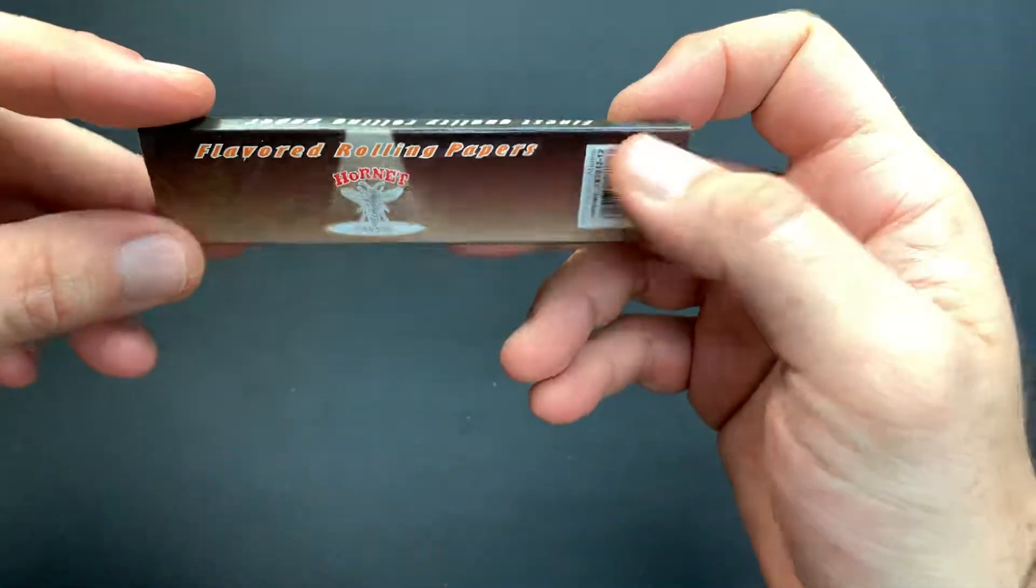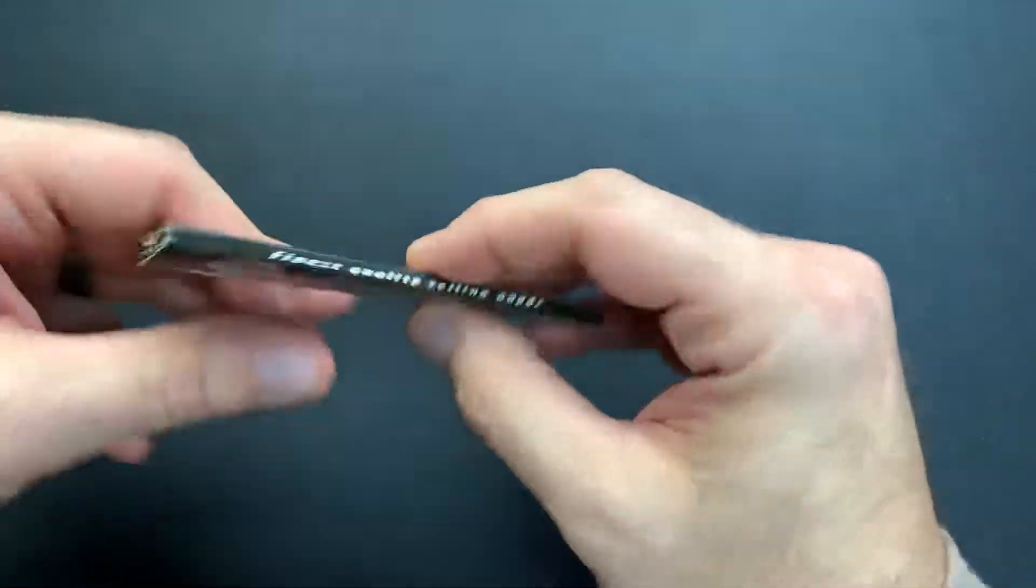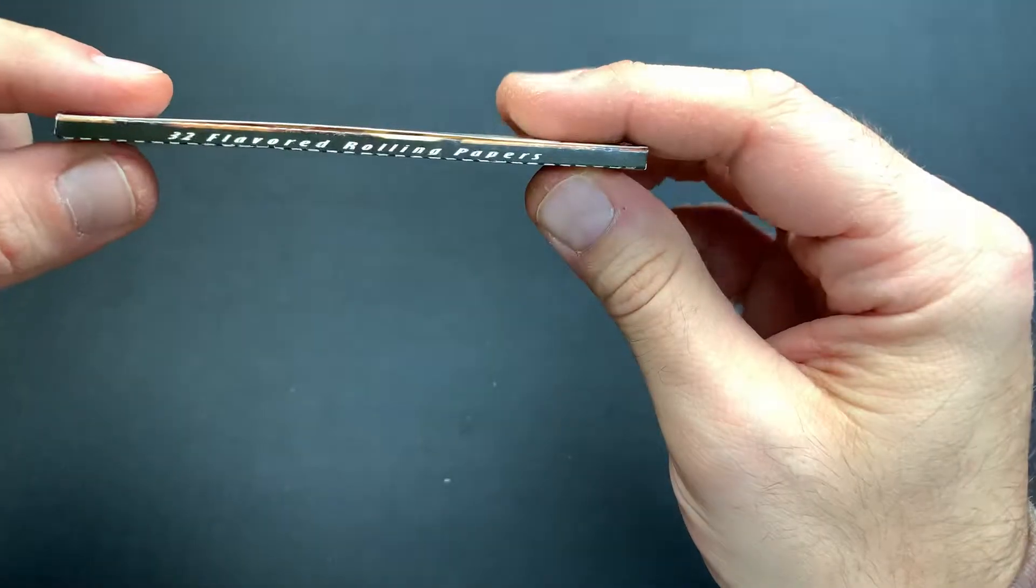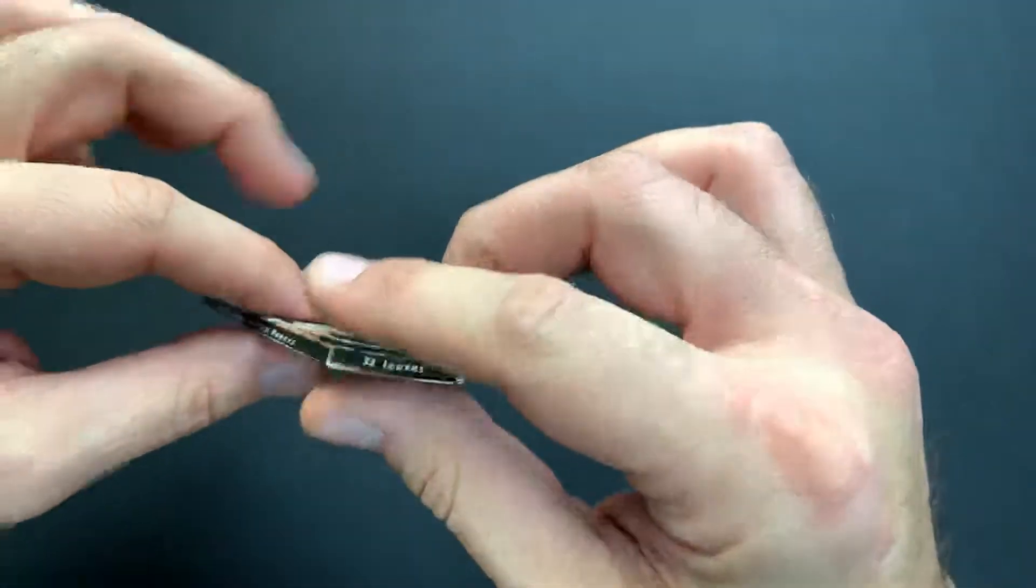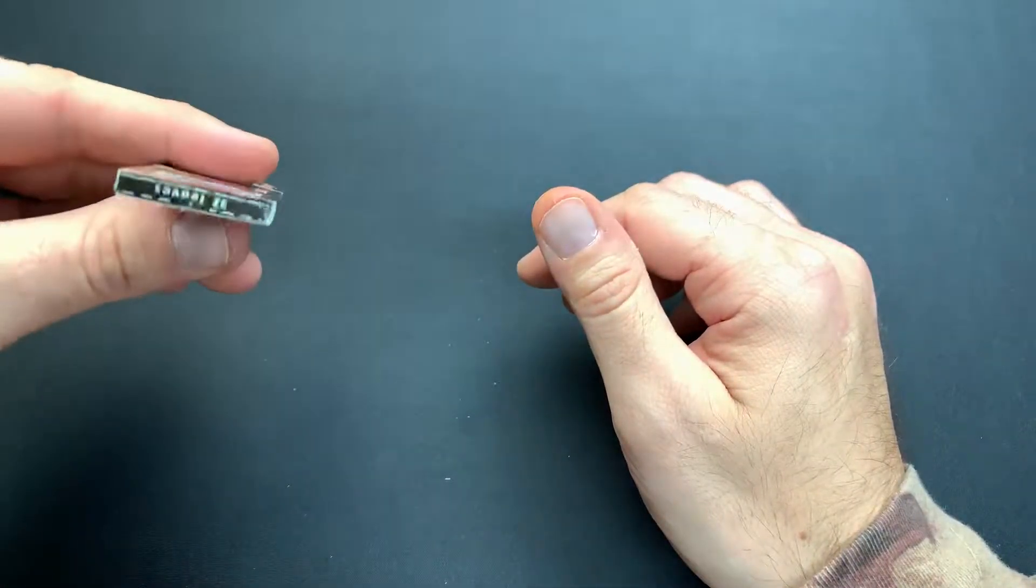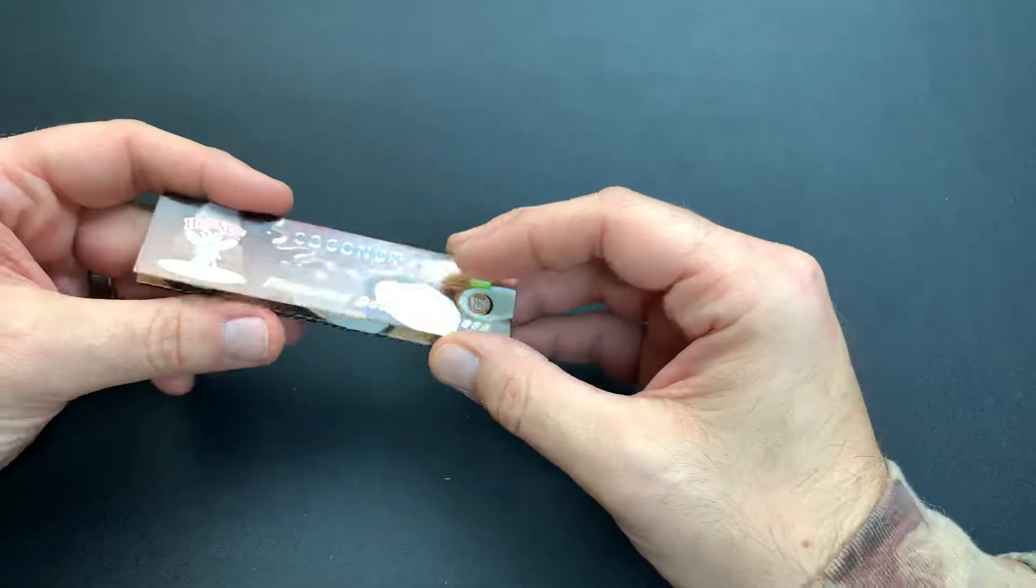We also have flavored rolling papers on the back as well. We got finest quality papers which we know they're not. We got 32 flavored rolling papers and then 32 leaves on the end caps. So let's check out the inside of the pack here.